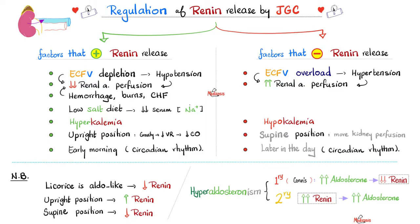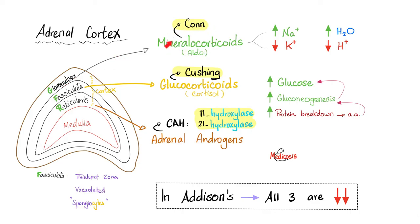If you have a tumor in the adrenal cortex secreting too much aldosterone, aldosterone will be high; as negative feedback, renin will drop. This is primary hyperaldosteronism, also called Conn's syndrome — aldo is high, renin is low. Conversely, in secondary hyperaldosteronism — maybe due to hypotension or a kidney tumor secreting too much renin — renin goes up first, then raises angiotensin 1, angiotensin 2, and finally aldosterone. So in secondary hyperaldosteronism, both renin and aldosterone are high.